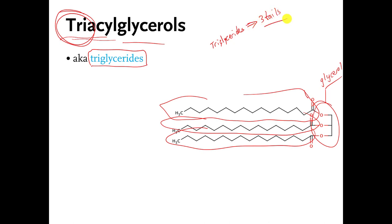The thing I want you to know is that triglycerides have three tails. That's going to be the easiest way to look at a lipid molecule and categorize it: fatty acids have one tail, and triglycerides have three tails.